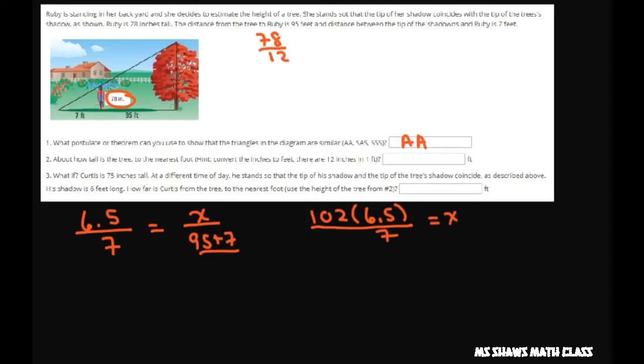So 102 times 6.5 is 663, divide that by 7, and you get 94.71 equals x. Now again, we need to the nearest foot, so round that up and that gives you 95 feet. So this part, your height is 95.